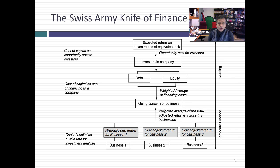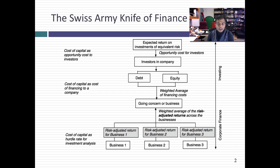I also teach valuation, and in valuation it shows up as the discount rate when you do a DCF. It also plays in the background when you talk about EV to EBITDA multiples or EV to sales multiples. Cost of capital shows up everywhere, and it's perhaps because it's used in so many different contexts by so many subgroups of people that I think it's a vastly misunderstood number.